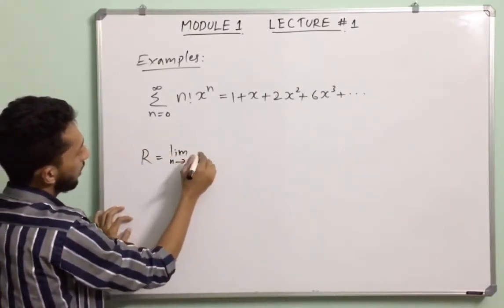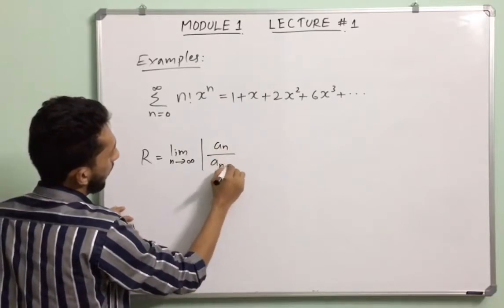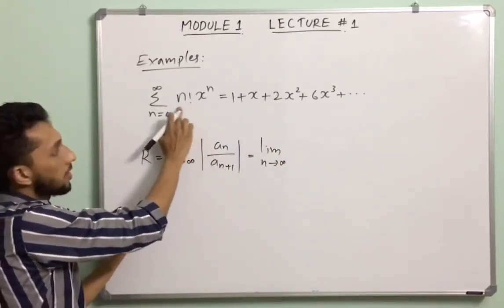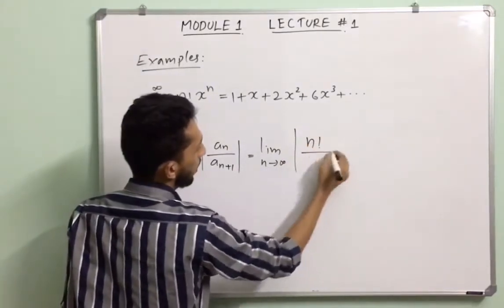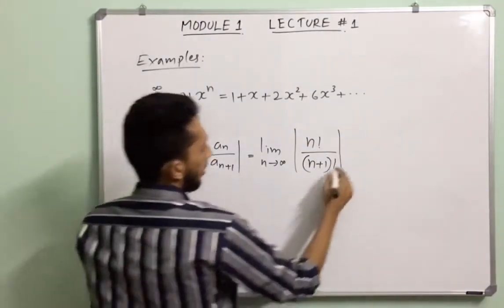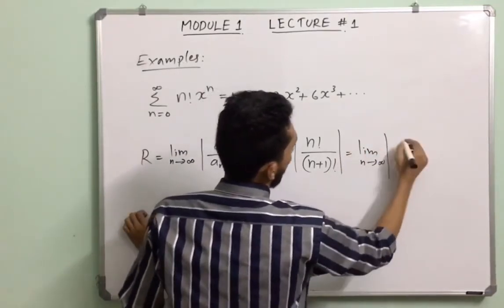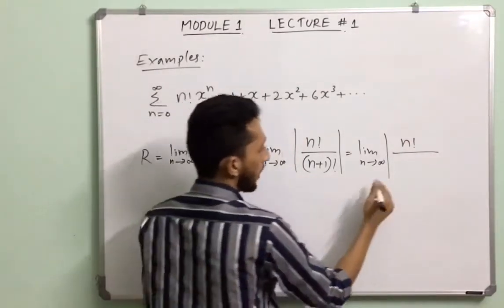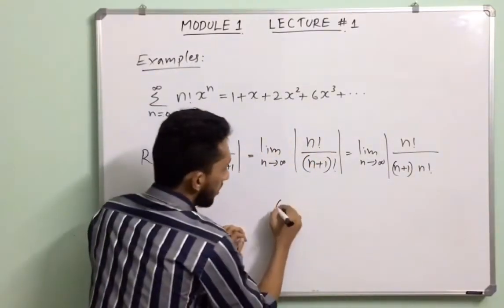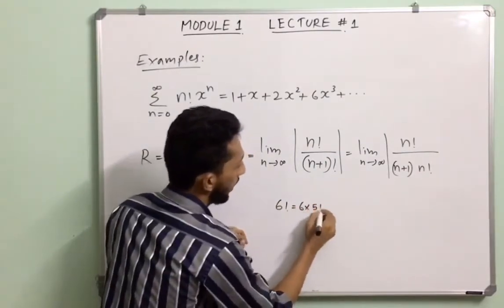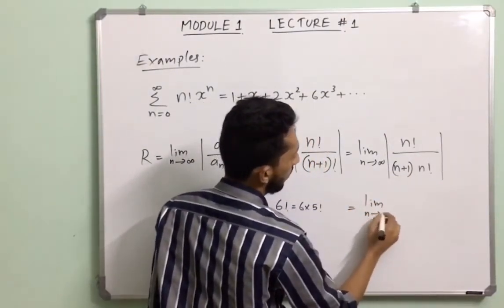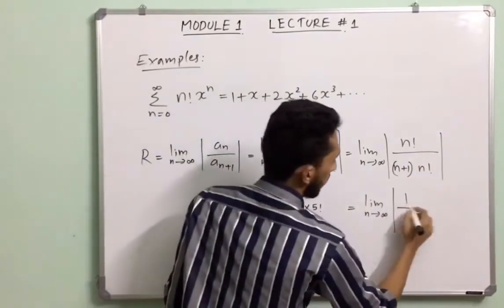R equals limit as n tends to infinity of |aₙ / aₙ₊₁|, that is limit as n tends to infinity of n! divided by (n+1)!. Simplifying, n! and n! cancel, giving limit of 1/(n+1).